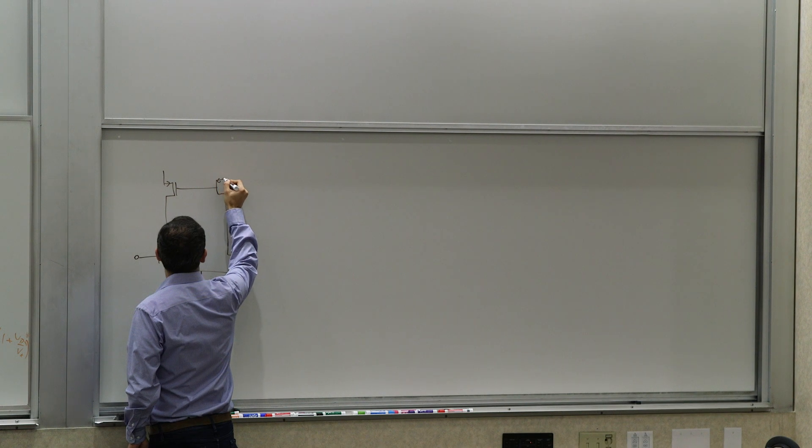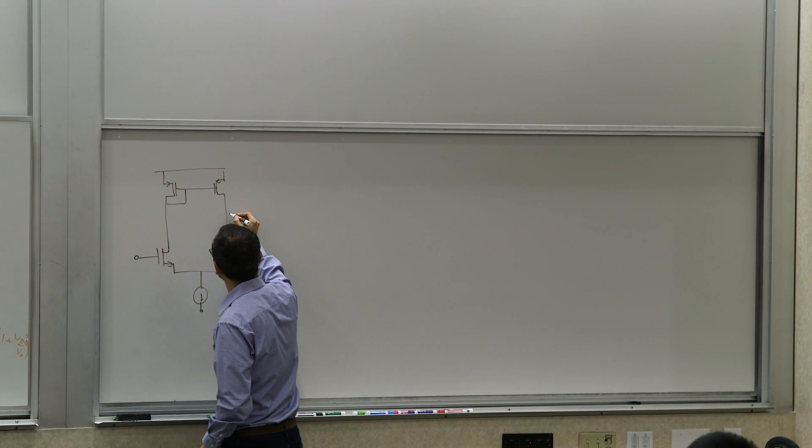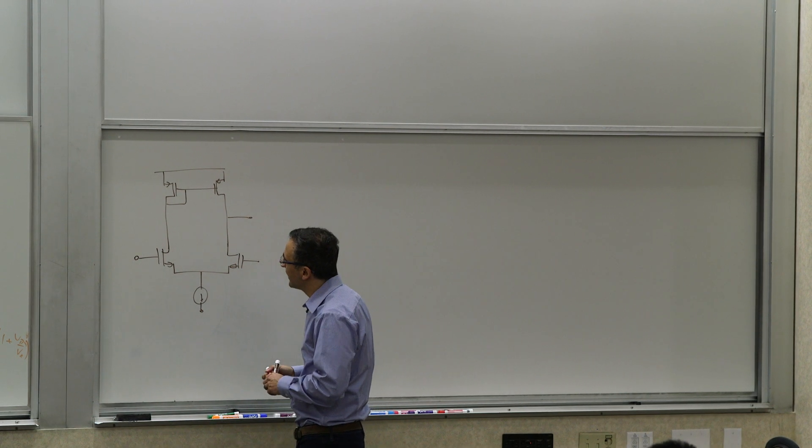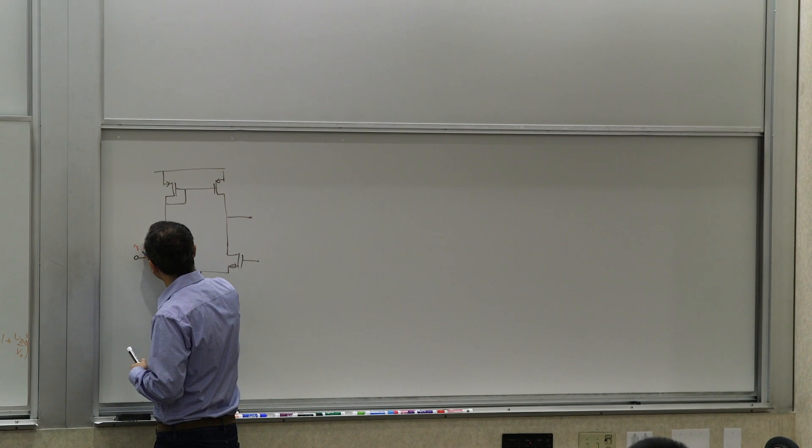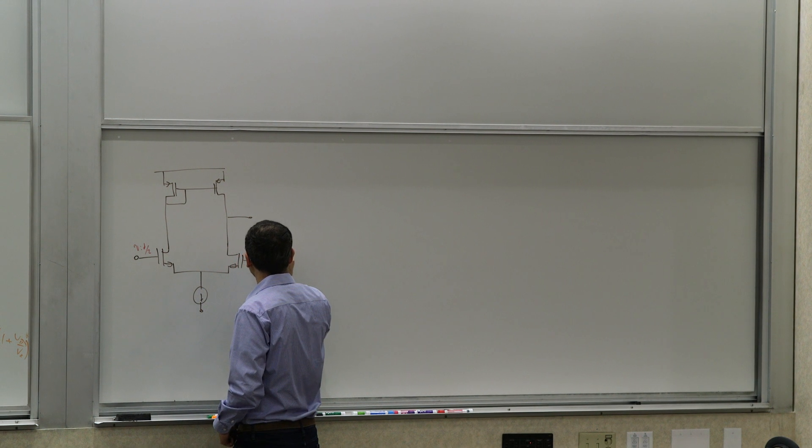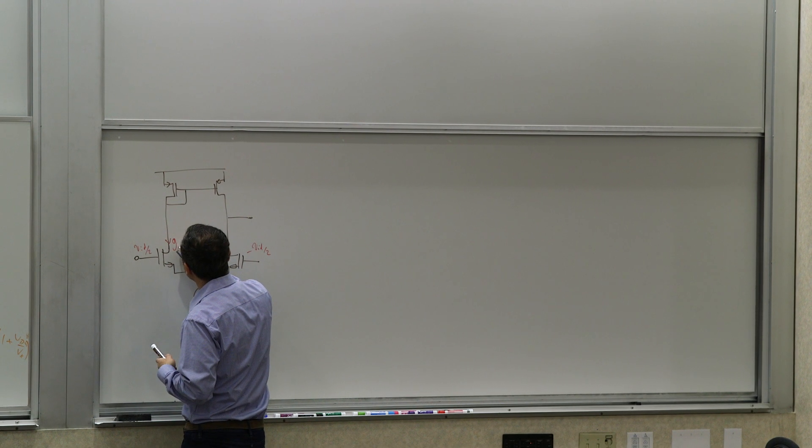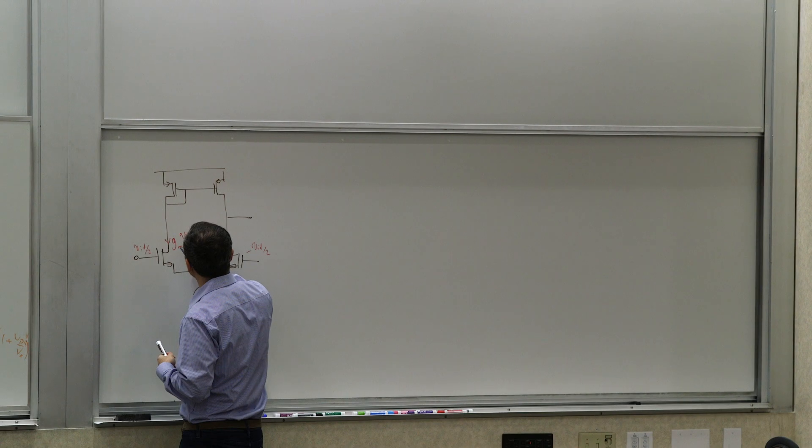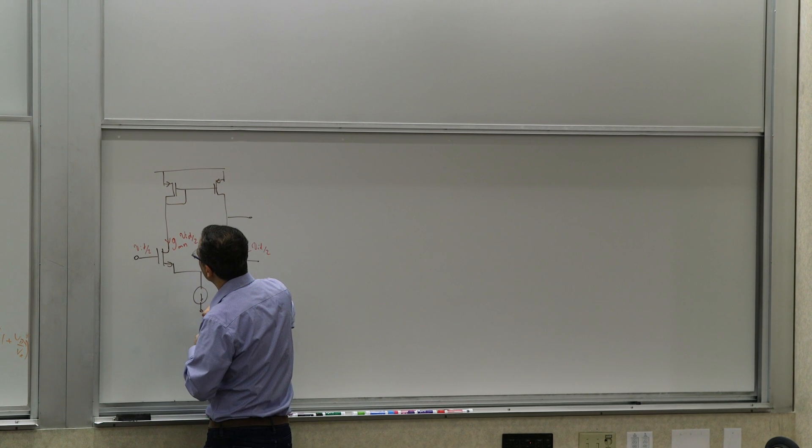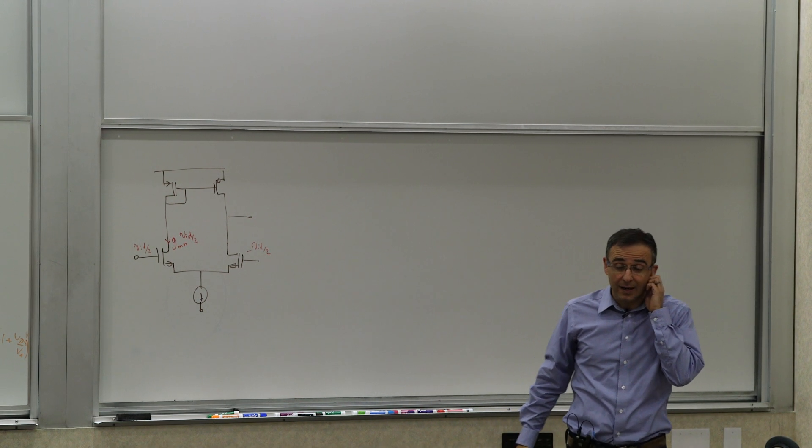If you have a MOSFET stage, the same deal. You can actually implement a current mirror to reflect the current from the input to the output. The way to think about it is that if you're applying a differential input, VID over 2 and negative VID over 2, the drive current here is going to be GMVID over 2. Let's call it GMN for a MOSFET because each one of them will have its own W over L, and they don't necessarily have the same GM.